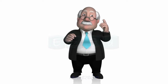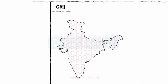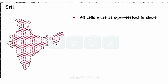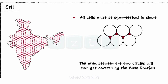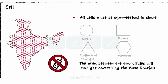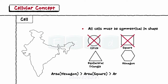As the city is geographically divided into small cells, it is mandatory that all cells must be symmetrical in shape. Based on this, we have four geometrical shapes: circle, square, equilateral triangle, and hexagon. If we select the shape of a cell as a circle, the area between two circles will not get covered by the base station, and any attempt of communication from that area will fail. Thus, we eliminate the circular shape. Hexagon has the highest area compared to the other shapes, so we divide the geographical area into hexagonal cells.